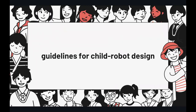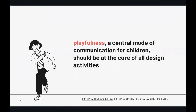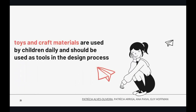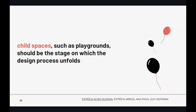From these two years of designing with children, we described seven guidelines for including children in the design process of robots. The first guideline is about playfulness — because it is a central mode of communication for children, it should be at the core of all design activities. The second is that toys and craft materials, used by children daily, should be tools for the design process. The third is that child spaces such as playgrounds or schools should be the stage in which the design process unfolds.